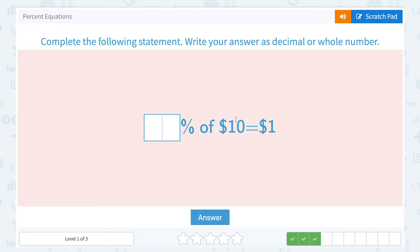Blank percent of $10 equals 1. Okay, so this time we want to find the percentage. So thinking about how we set up our equation, we know a percentage of our number equals $1.